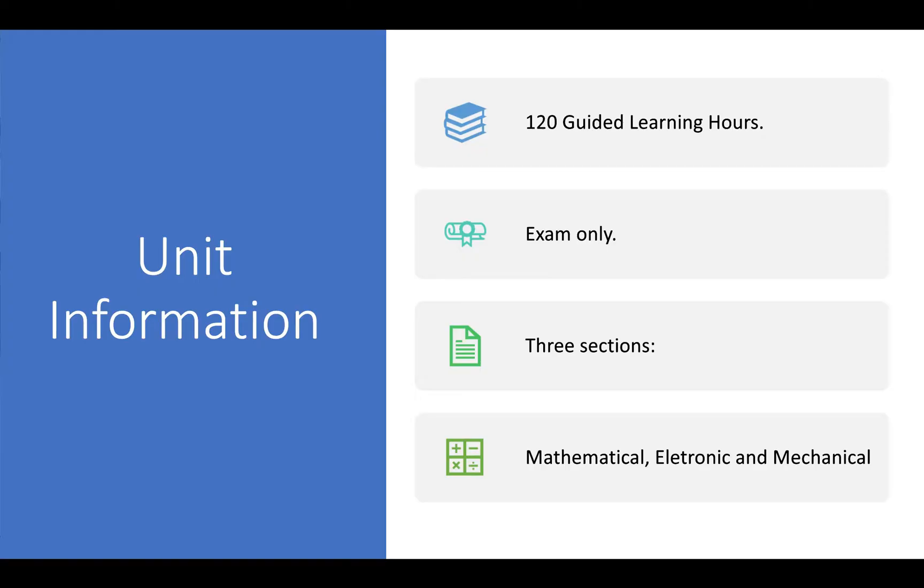Unit information: this is 120 guided learning hours. Some units are 60 guided learning hours, some are 90, and some are 120. 120 typically are the exam units or the very big coursework units. But for engineering, 120 guided learning hours is an exam. This one is an exam-only unit. It has three sections: mathematical, electronic, and mechanical.